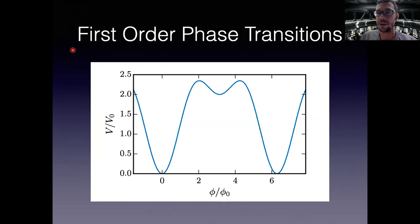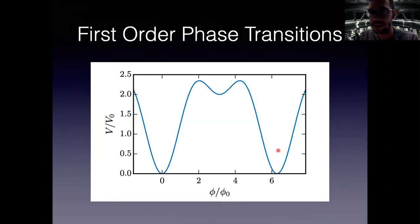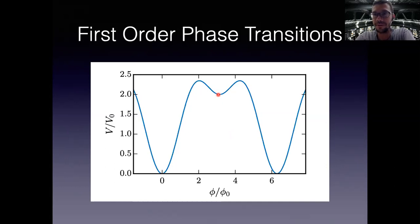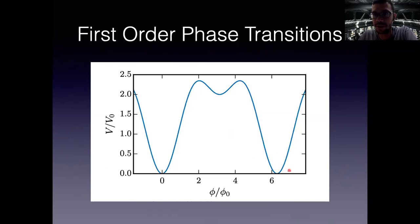What do I mean by false vacuum decay? We have a field whose potential has multiple minima. One of these minima is a local minimum but not a global minimum. We imagine putting a large region of the universe, or maybe our lab, localized at this local minimum — the false vacuum. In classical mechanics a ball would just sit there forever, but in the real world thermal fluctuations, external perturbations, or defects can drive the system over the barrier.